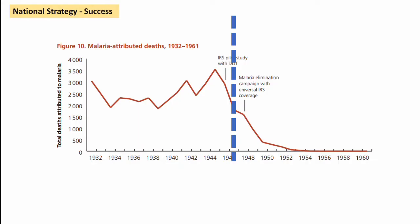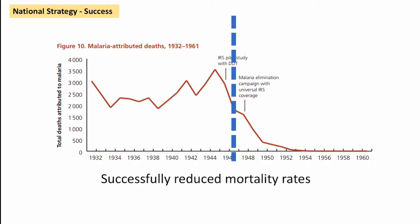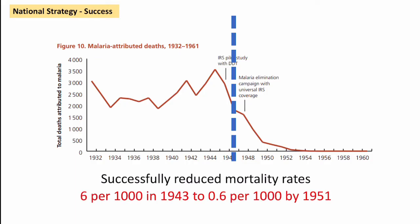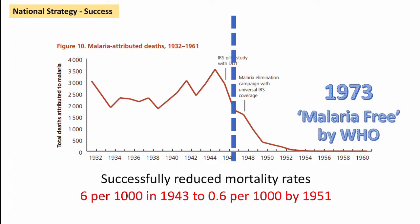This campaign was relatively successful. As we can see from the diagram, the period 1948 to 1951 is when the campaign happened, and after that point the malarial cases and the number of people dying from it went down significantly after many years of fluctuation. Six in a thousand died from malaria in 1943, and that was down to 0.6 by 1951. The ultimate sign of success was that by 1973, the World Health Organisation had declared Mauritius malaria-free.